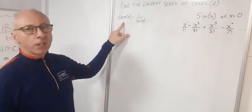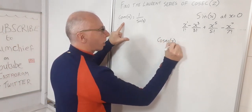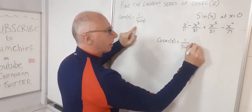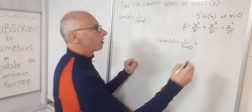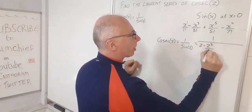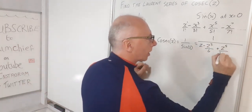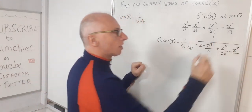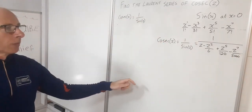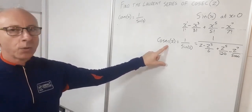Now we want to find the Laurent series, so we'll move into complex numbers and use Z. Cosecant of Z equals 1 over sine of Z, which equals the reciprocal of the Taylor series: 1 over (Z minus Z cubed over 6 plus Z to the 5 over 120 minus Z to the 7 over 5040 and so on). We need to do polynomial long division, and that should lead us to the Laurent series for the cosecant function.